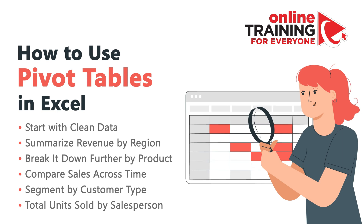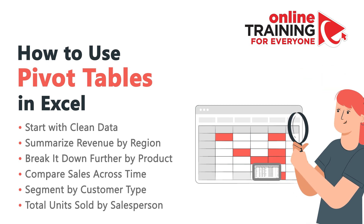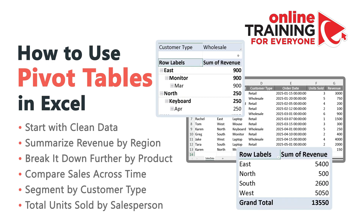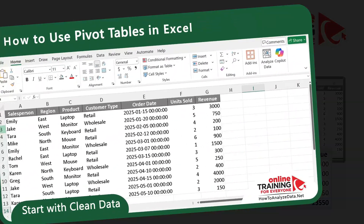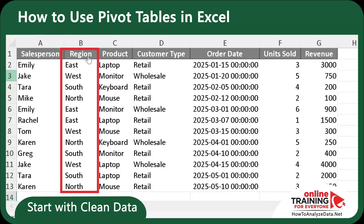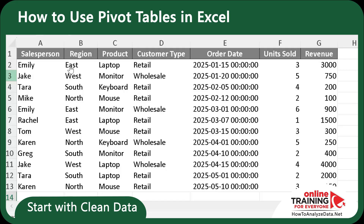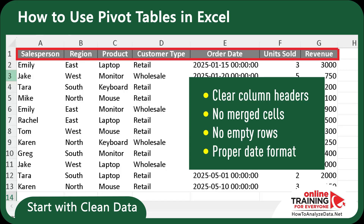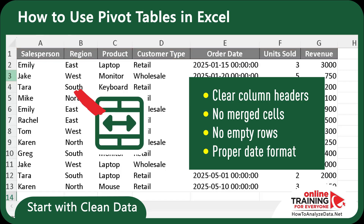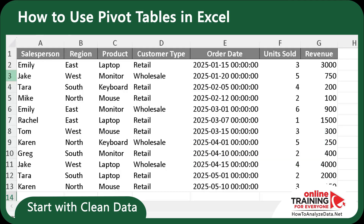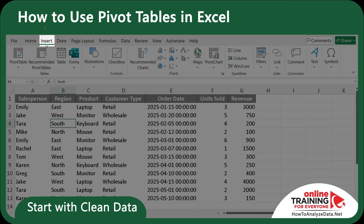Very often, professionals face the challenge of summarizing large datasets quickly and accurately. Let's say you're handed a messy sales report — dozens of rows, different products, dates, regions — and your job is to turn it into a clean summary fast. This is where pivot tables shine. The columns show data for salesperson, region, product, customer type, order date, units sold, and revenue. Some salespeople have multiple records — Emily has two records, both for the east region, with sales of laptop and monitor. Before creating a pivot table, every column must have a clear header, there shouldn't be any merged cells or empty rows, and dates must be in a valid Excel date format. Everything checks out, so let's click Insert and then Pivot Table, select New Worksheet, and click OK.